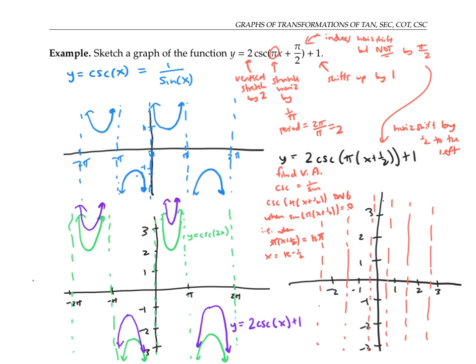So once we've got the vertical asymptotes in place, we can see that our graph fits in between them.